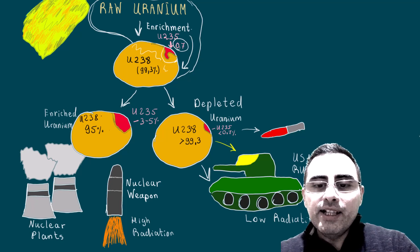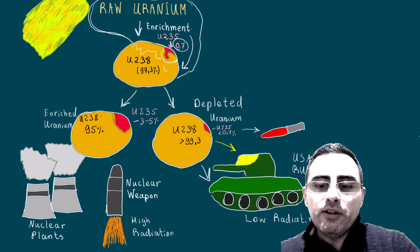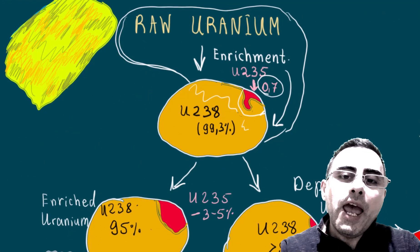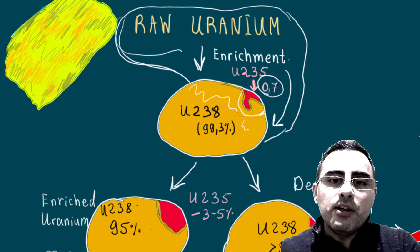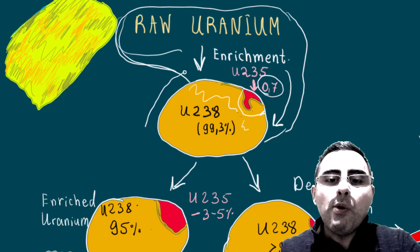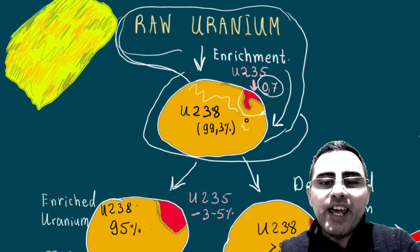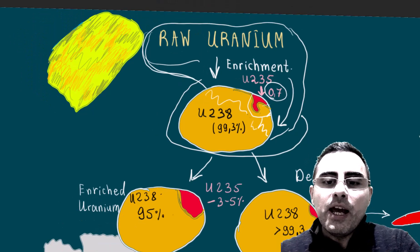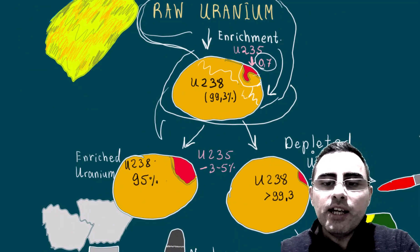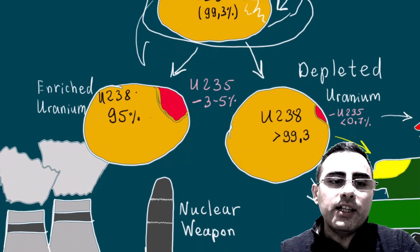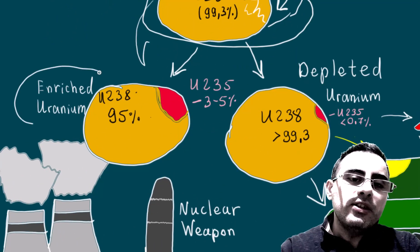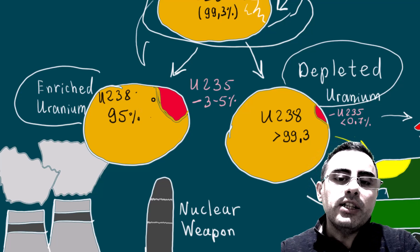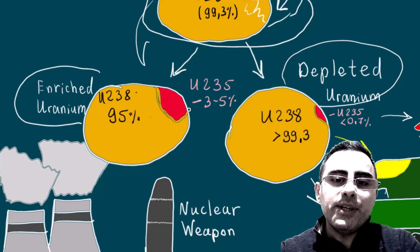Depleted uranium. Let's discuss depleted uranium safety and health effects. Let's start from the beginning. First, we have raw uranium. Raw uranium contains two isotopes of uranium: one is less radioactive, another is more radioactive. After enrichment process, we get two types of uranium.